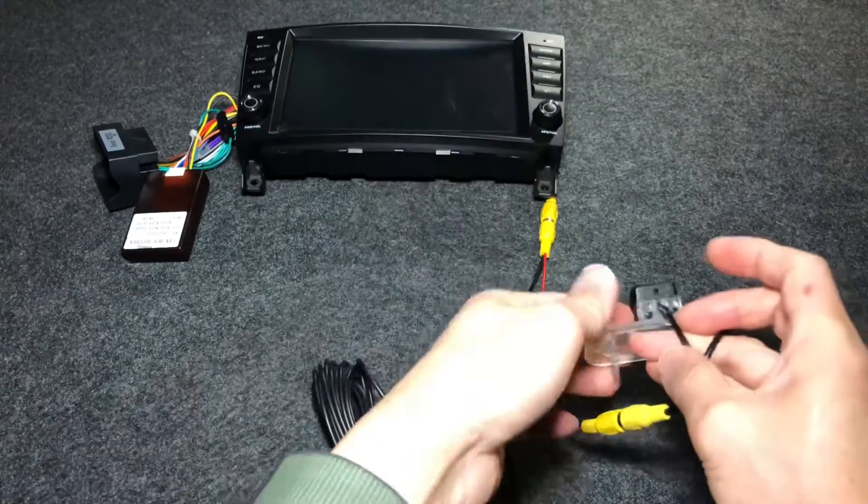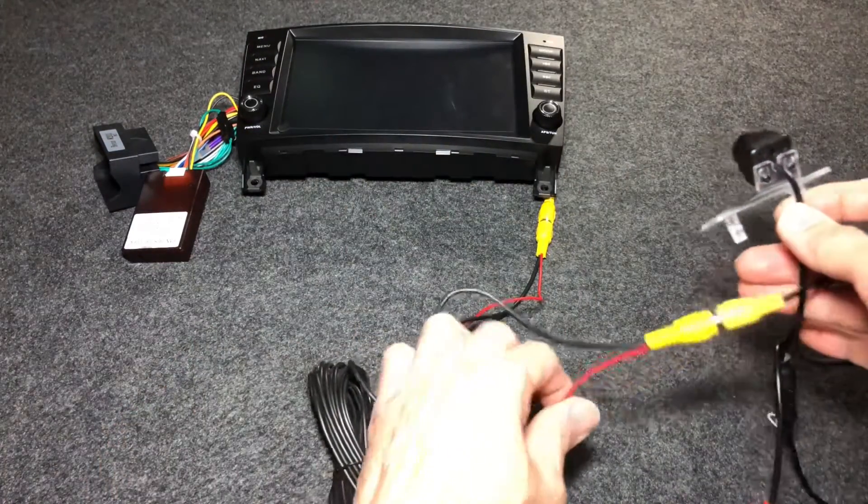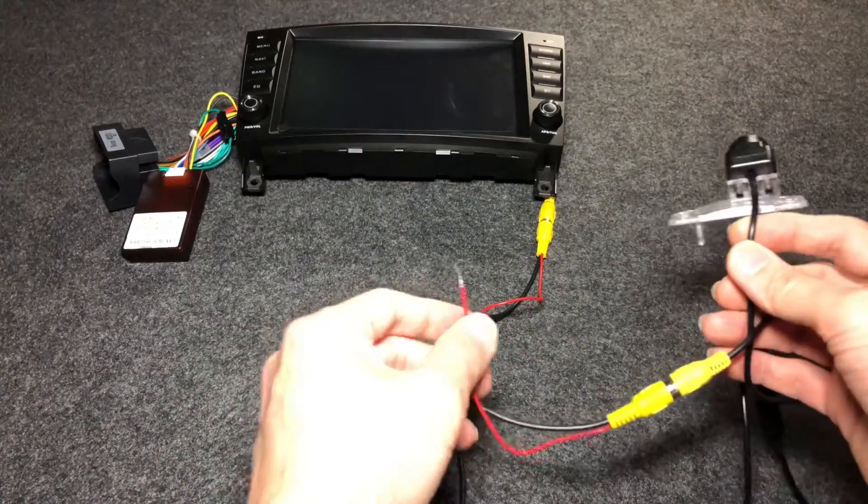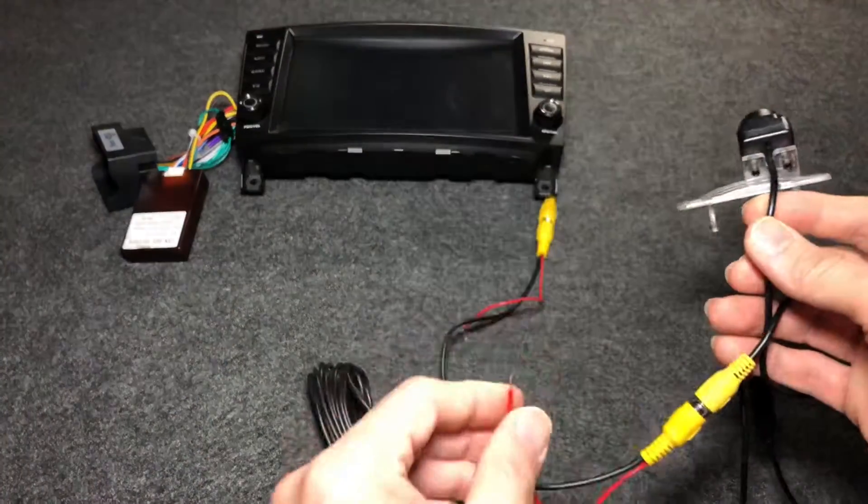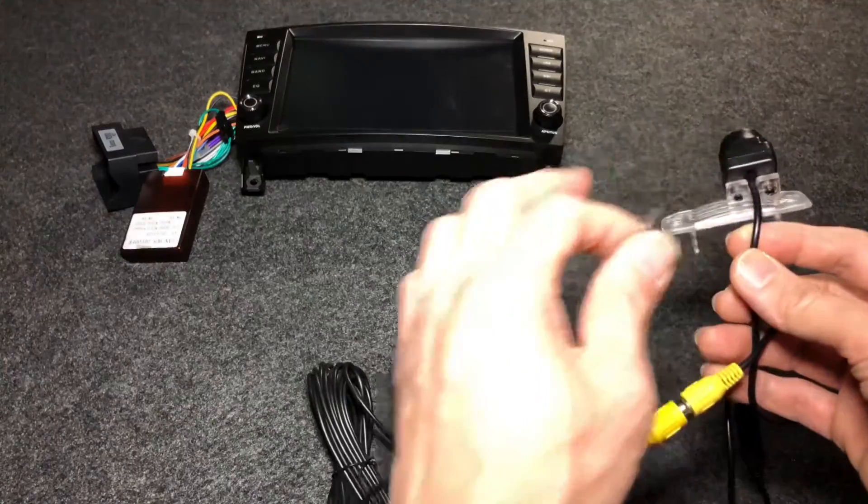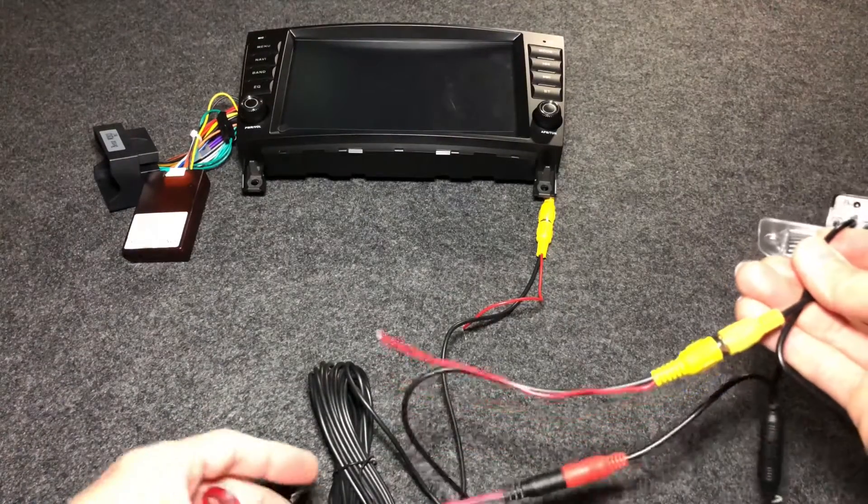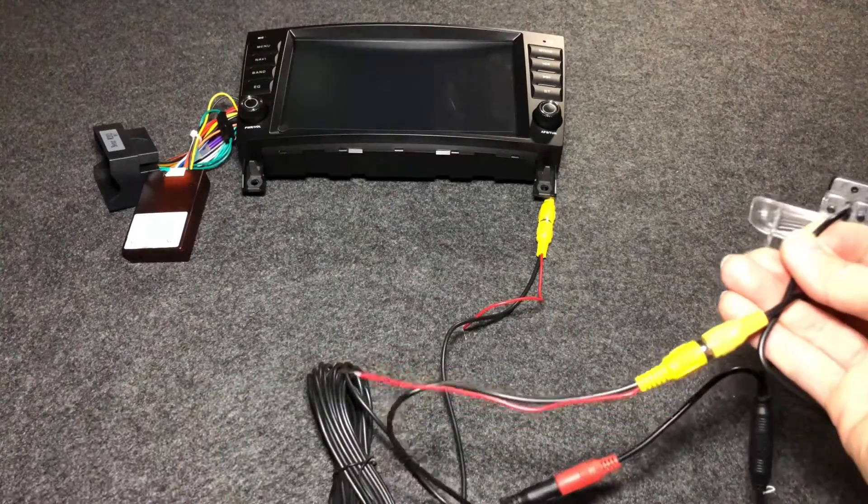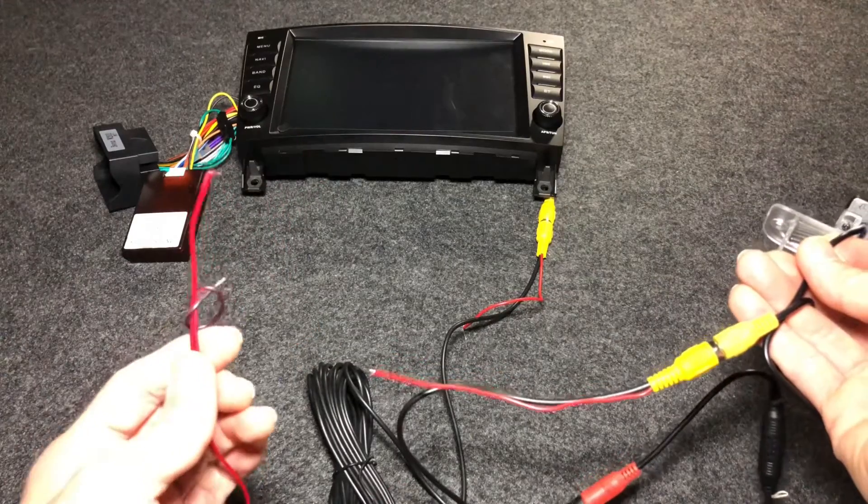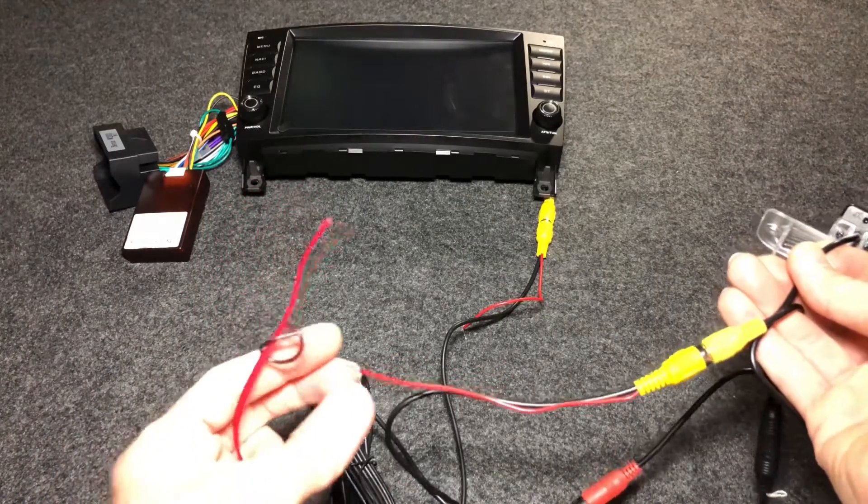The tricky bit is powering it up. Now this camera here needs a 12 volt signal to turn on, and what they give you is these cables. Typically what other installers would do is tap this one to the reverse camera light.